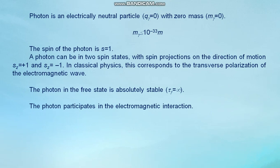Photon is an electrically neutral particle with zero mass. The spin of photon is equal to 1. A photon can be in two spin states with spin projections on the direction of motion Sᴢ equals plus 1 and Sᴢ equals minus 1. In classical physics, this corresponds to the transverse polarization of the electromagnetic wave. The photon in the free state is absolutely stable. The photon participates in the electromagnetic interaction.